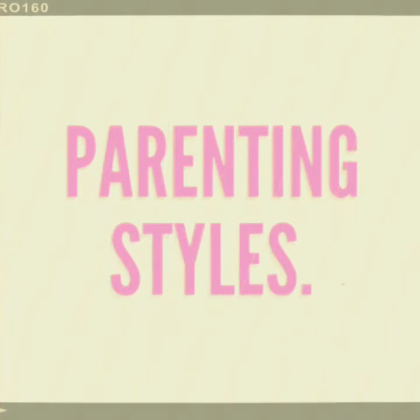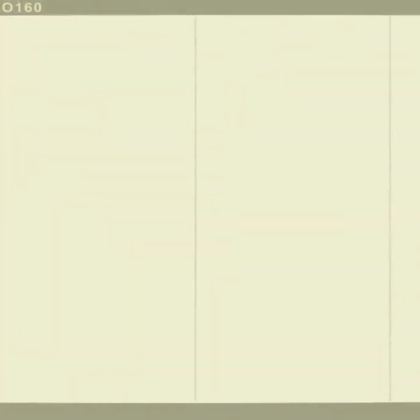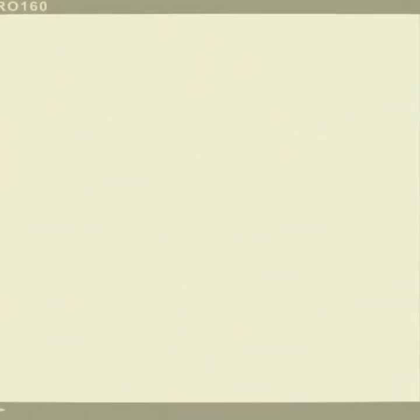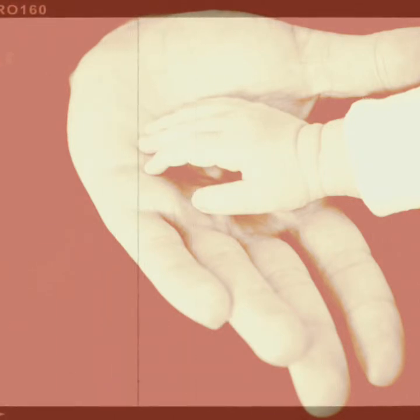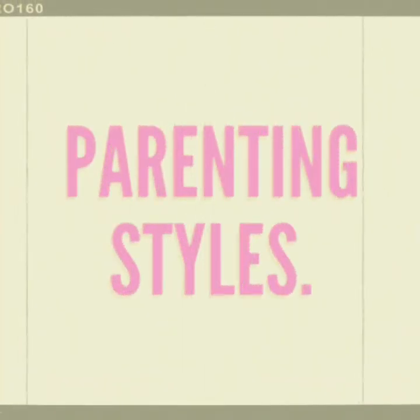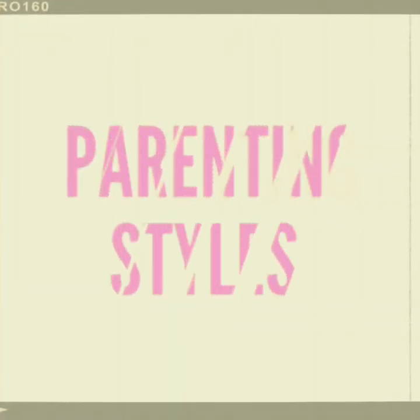The third type of parenting style is authoritative parenting. Authoritative parents are both demanding and responsive. They monitor and impart clear standards for their children's conduct. They are assertive but not intrusive or restrictive. Their disciplinary methods are supportive rather than punitive. They want their children to be assertive, socially responsible, self-regulated, and cooperative.